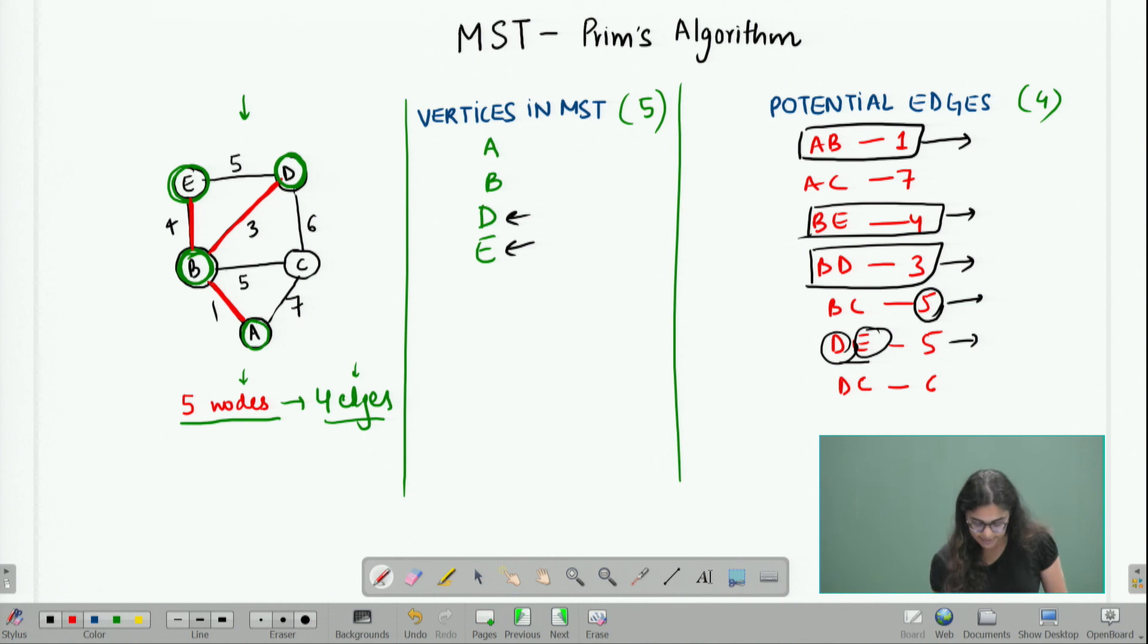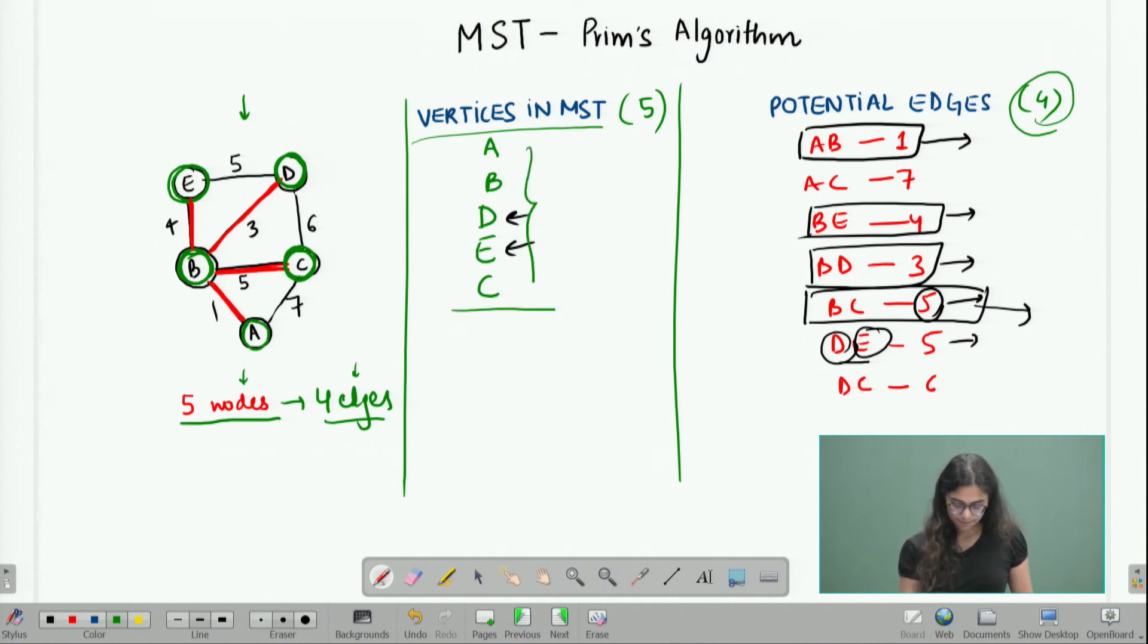If I include BC in my MST, I will be adding a new vertex which will be C, so this is beneficial for me. So, I will choose edge BC to be part of my MST and I will add C to my list of vertices included in the MST. When I do this, I know that I have chosen four edges that I needed to choose and I have also completed traversing all the vertices in the given graph and have included them as part of my MST, all five A, B, C, D and E.